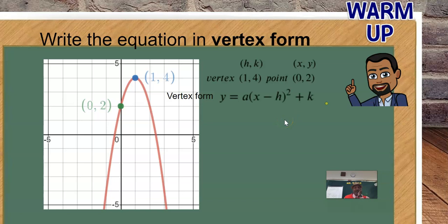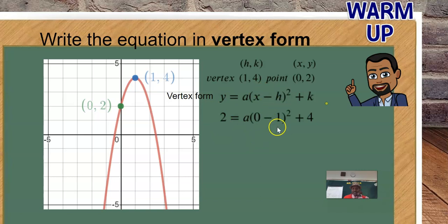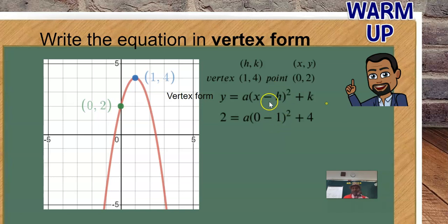Vertex form looks like this: y = a(x - h)² + k. Let's fill in our points. y is 2, x is 0, h is 1, and k is 4. Notice that there's a minus sign in front of the 1 — it doesn't make it a negative 1 per se, but when filling in the form, you must make sure you don't change any of the signs.